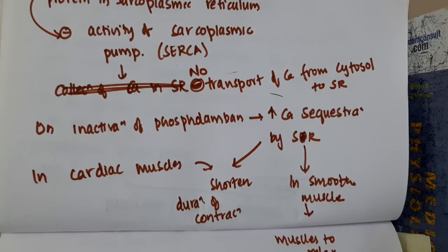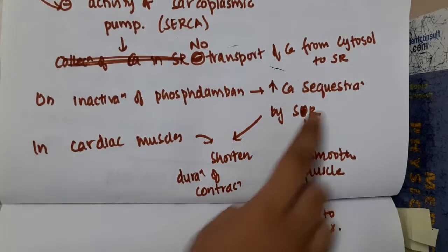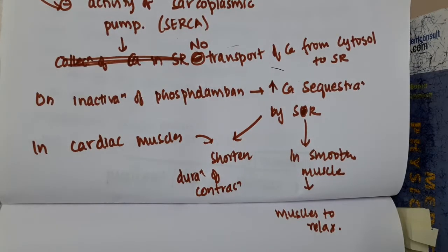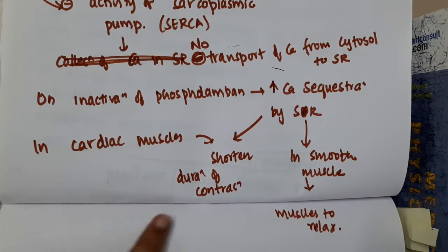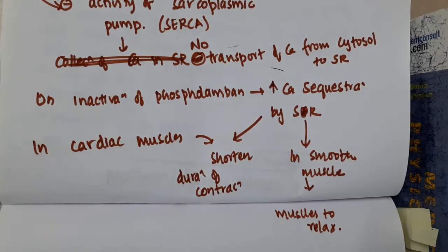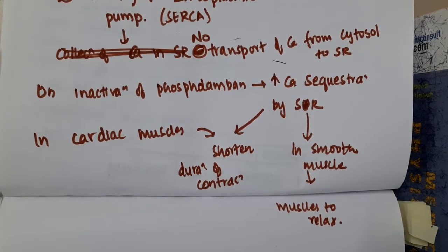Whenever inactivation of phospholamban occurs, this increases calcium sequestration into the sarcoplasmic reticulum. In cardiac muscles, this leads to shortening of the duration of contraction. This increased calcium sequestration in the sarcoplasmic reticulum also causes smooth muscles to relax.